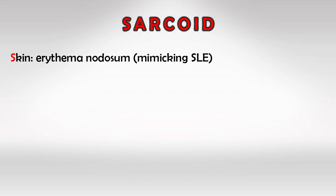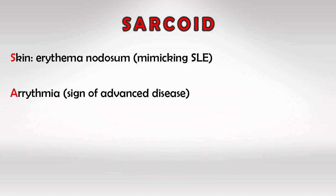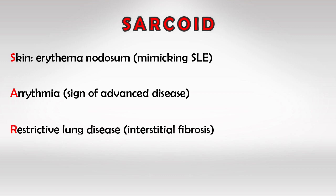A is for arrhythmias, which is a horrible sign because it indicates advanced disease. R is for restrictive lung disease, because sarcoidosis causes interstitial lung fibrosis.